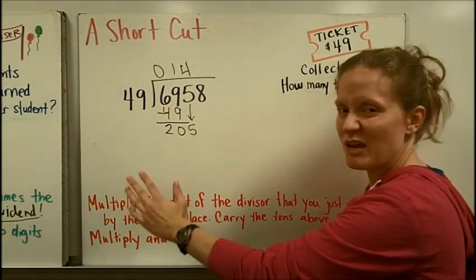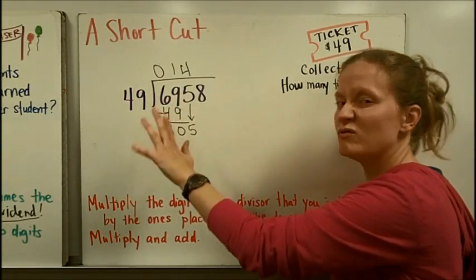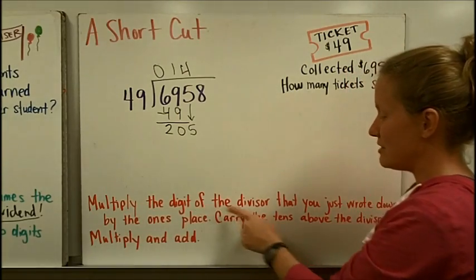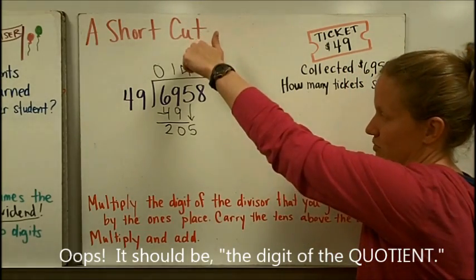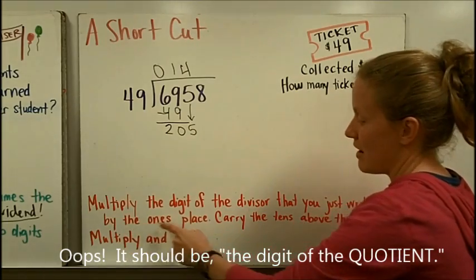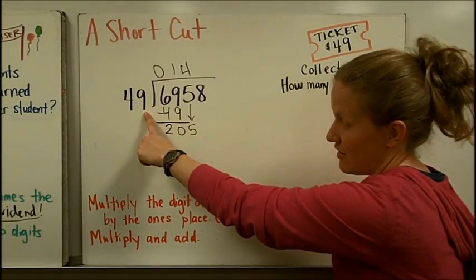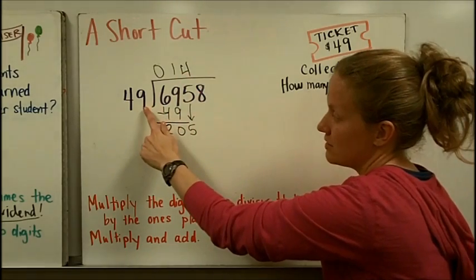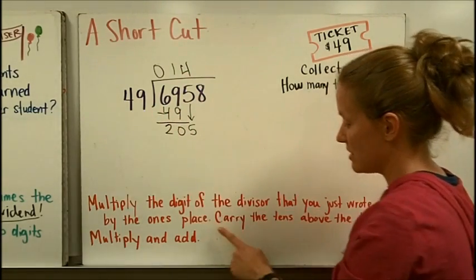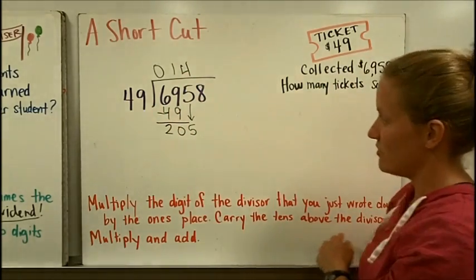You can actually do your multiplication right over here if you're pretty sure that you've got the right number. Multiply the digit of the divisor that you just wrote down, that would be a 4 in our case, by the ones place of the digit of our divisor. So I'm going to do 4 times 9 is 36.